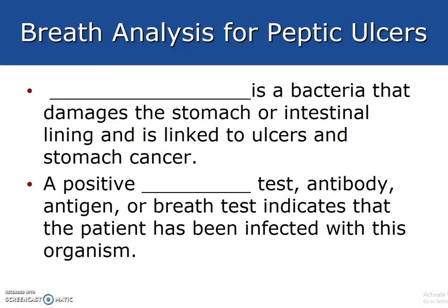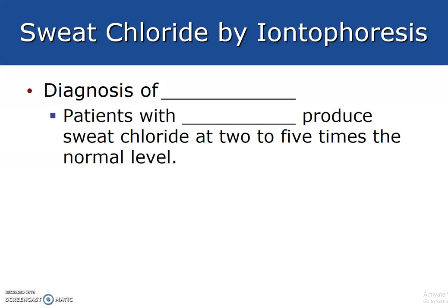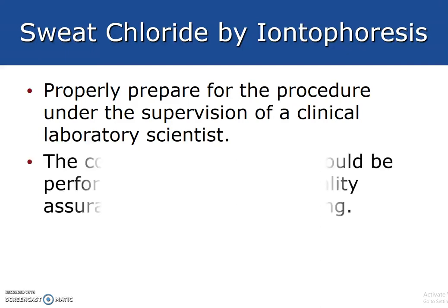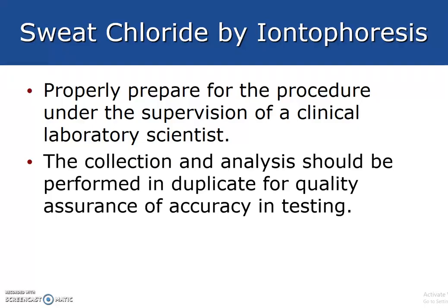Breath analysis for peptic ulcers: H. pylori is a bacteria that damages the stomach or intestinal lining and is linked to ulcers and stomach cancers. A positive H. pylori test, whether antibody, antigen, or breath test, indicates the patient has been infected with this organism. Sweat chloride testing is used for the diagnosis of cystic fibrosis. Patients with cystic fibrosis produce sweat chloride at 2 to 5 times the normal level. We perform this test in duplication to confirm results. There is also now a blood test for cystic fibrosis, which is sometimes less invasive for a child. This concludes Chapter 16.